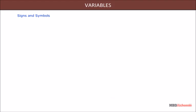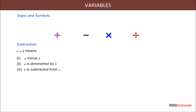Signs and symbols. Plus, minus, times, and divide are the symbols for addition, subtraction, multiplication, and division respectively. Addition of a and b means a plus b, a is increased by b, a is added to b. Subtraction of a and b means a minus b, a is diminished by b, b is subtracted from a.